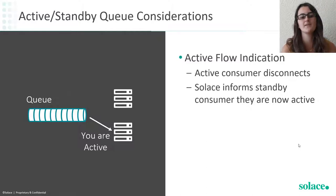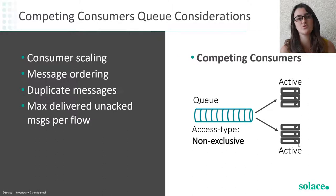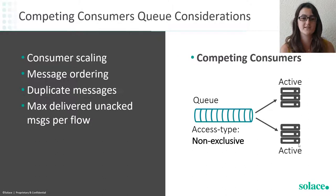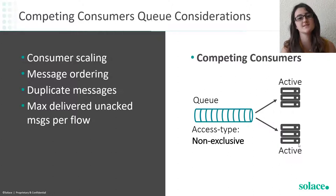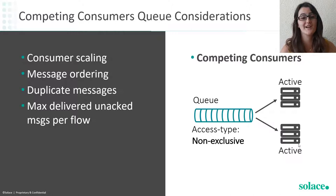Now let's look at the competing consumers queue. To summarize the different considerations: consumer scaling, message ordering, duplicate messages — which we covered just previously, it's basically the same case — and the property max delivered unacknowledged messages per flow. Let's look at each of these.